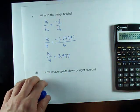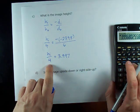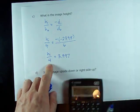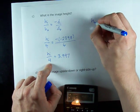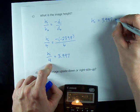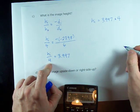H_I over 4 equals 3.99. Actually, I'm going to round that to 997. And now I have to undo dividing by 4. To undo dividing by 4, I have to take the right side of my equation and multiply by 4.